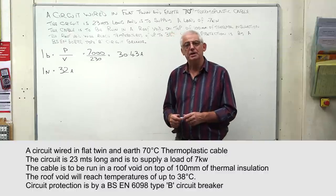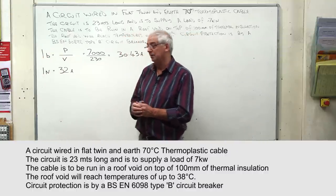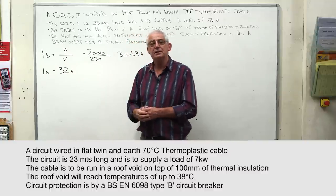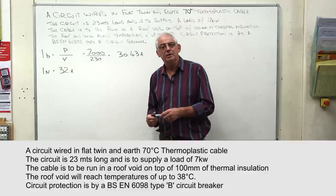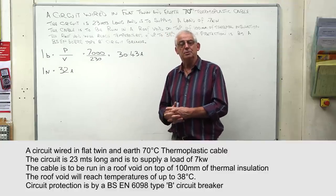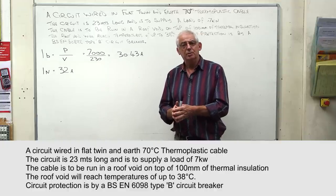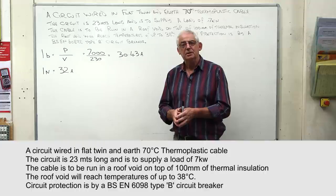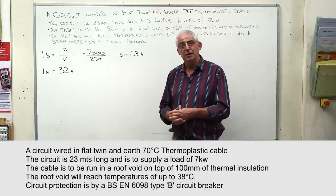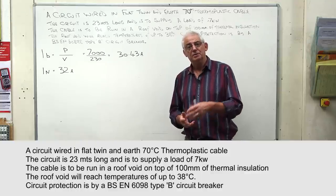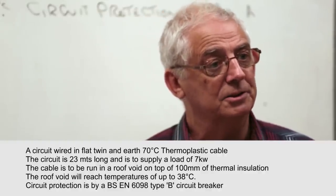The nearest rating for a BS EN 60898 circuit breaker is 32 amps. The symbol we use for our protective device rating is In. Now I need to look at the question and identify any environmental influences affecting the cable — such as temperature and installation method — which we call rating factors.